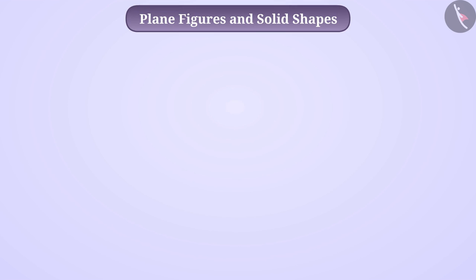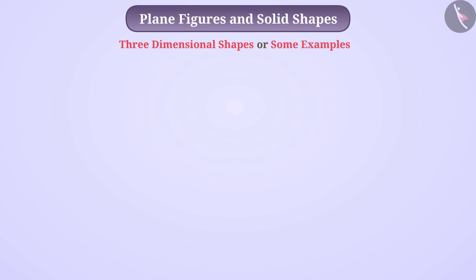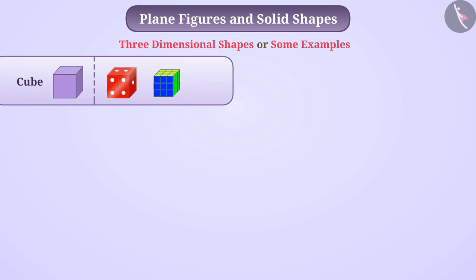In the previous class, we have studied about some geometric shapes. Do you remember? Pause the video and recall it. Some examples are as follows. This is a cube. Dice, Rubik's cube, ice cube, all have cubed shape.